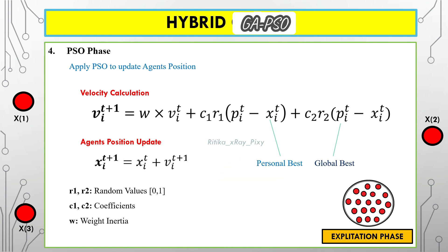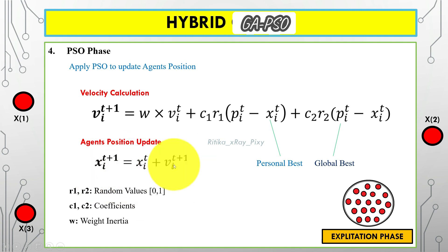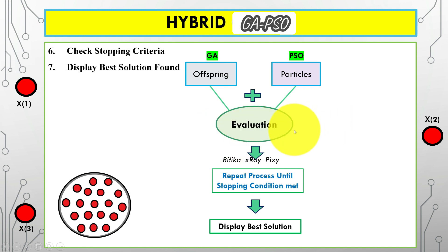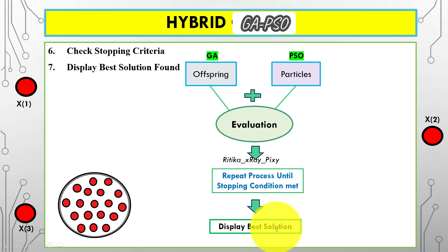Next, we apply the PSO phase to update agents' positions. First, we calculate the velocity for each agent, then update the agent's position by adding velocity to the previous position. We then evaluate the performance of the new solutions by calculating the fitness value for each agent again using the objective function. We repeat the process until the stopping condition is met, then display the best solution.